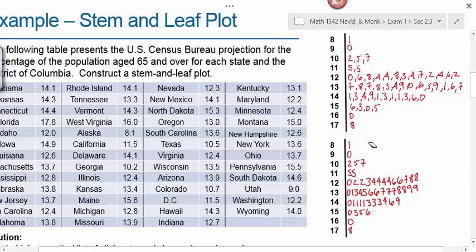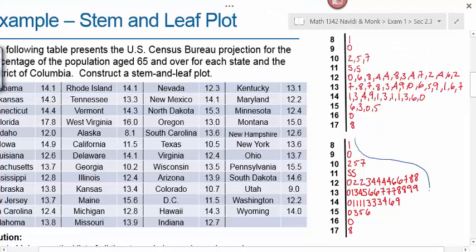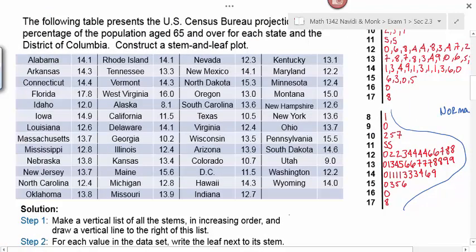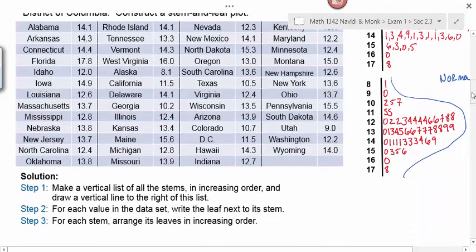This is what your final stem and leaf plot looks like. It takes all the data values and plots each individual value's leaf — its last digit — on the appropriate stem. The reason we like this kind of display is because it preserves our actual data values while still allowing us to see the general shape of the distribution. The steps are: make a vertical list of all stems in increasing order, draw a vertical line to the right, write each leaf next to its corresponding stem, then arrange the leaves from smallest to largest.